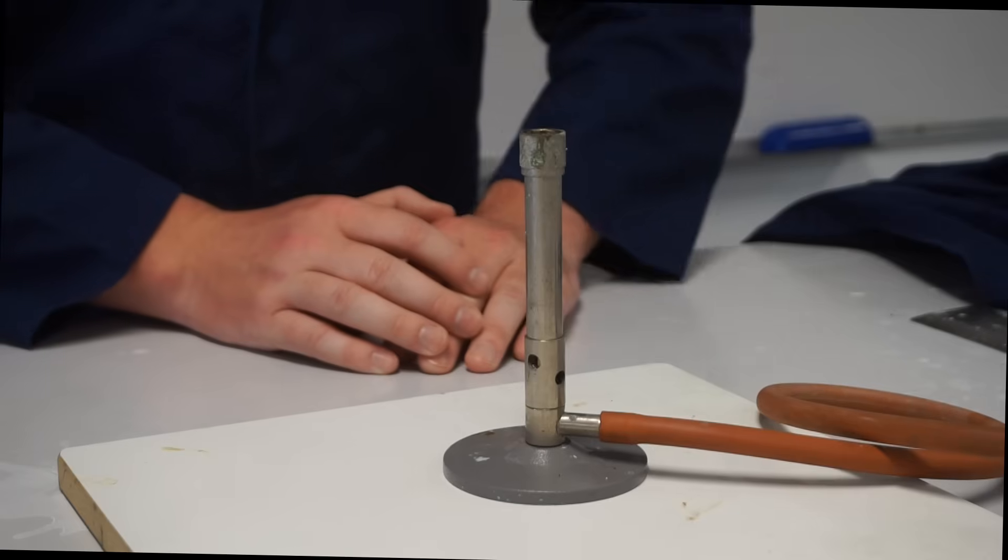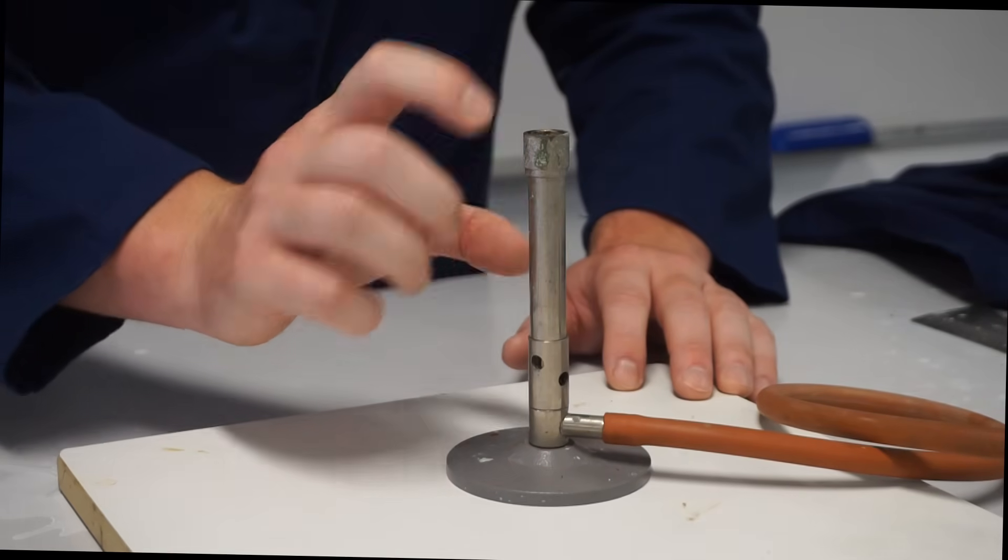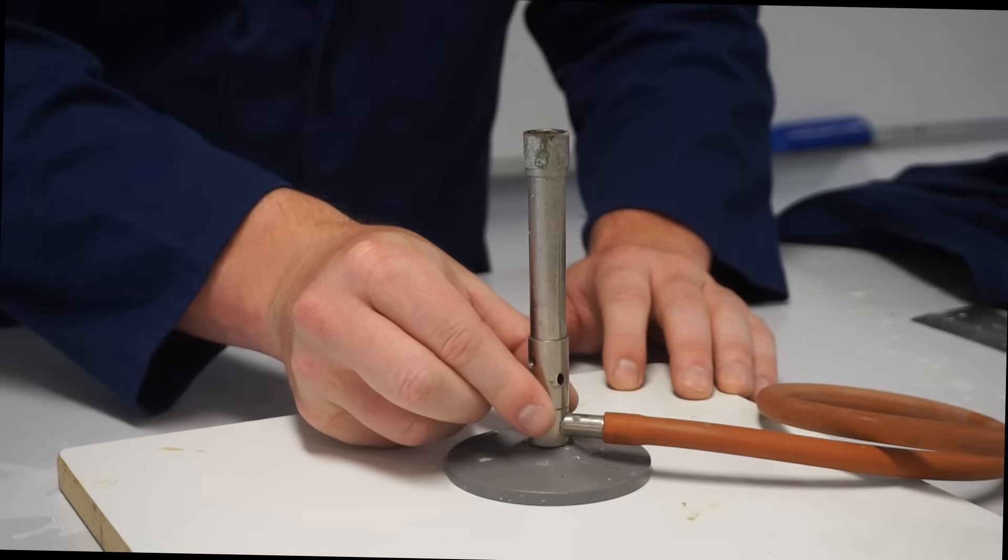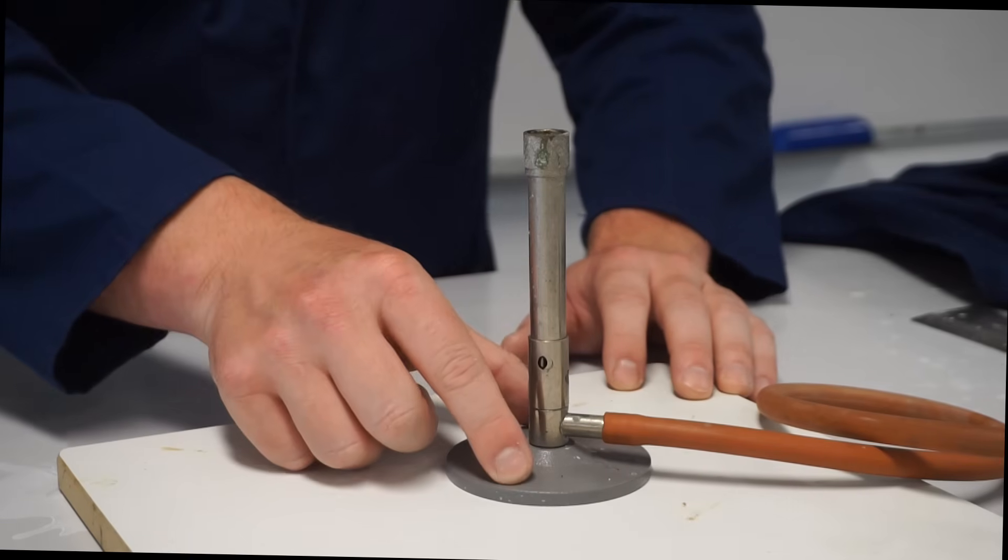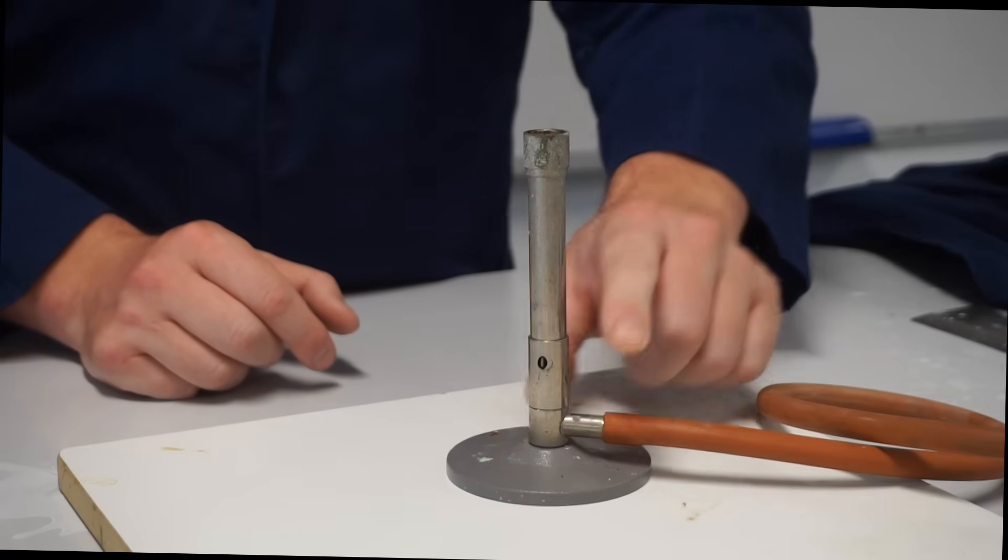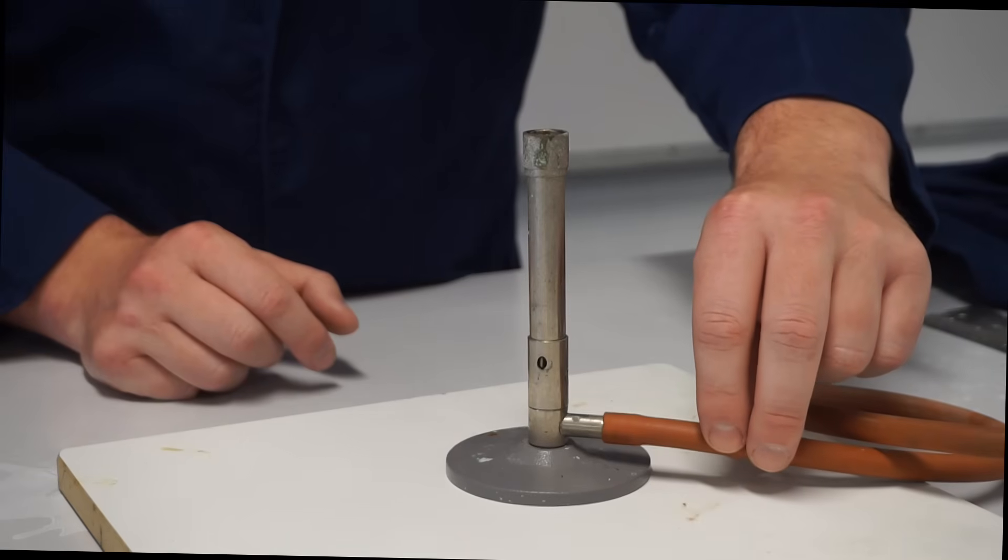Before we begin I just want to take you through some of the main parts of our Bunsen burner. We have the barrel, we have the collar which you can rotate to open and close a little air hole, we have the base, we have the gas inlet and we have the gas hose which is usually a rubber or silicon material.